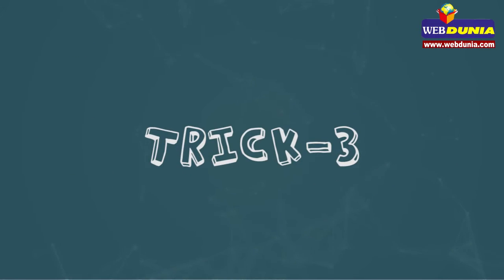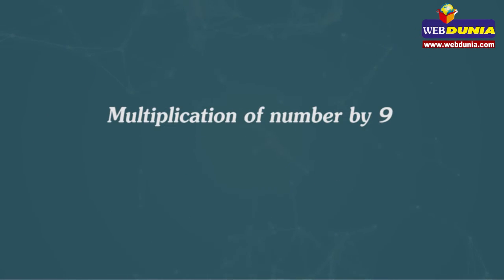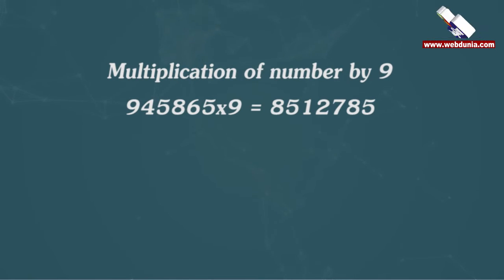Trick 3: Multiplication of number by 9. 945865 multiplied by 9 equals 8512785.